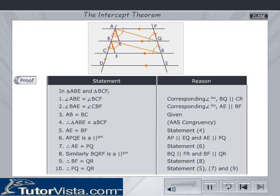Let us compare triangle ABE and triangle BCF. Angle ABE is equal to angle BCF, since they are corresponding angles of parallel lines BQ and CR. Angle BAE is equal to angle CBF, since they are corresponding angles of parallel lines AE and BF. AB is equal to BC. This data is given to us.